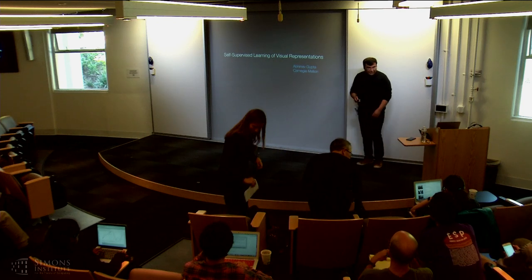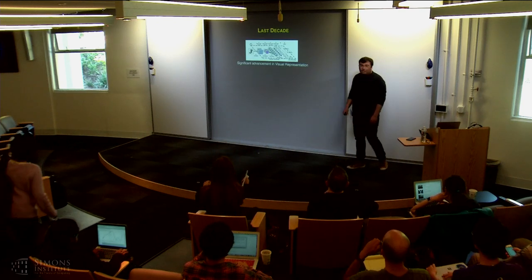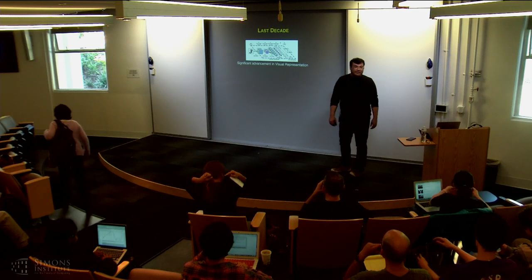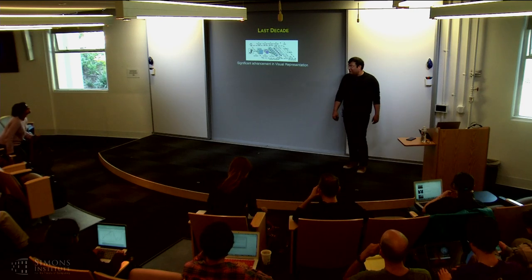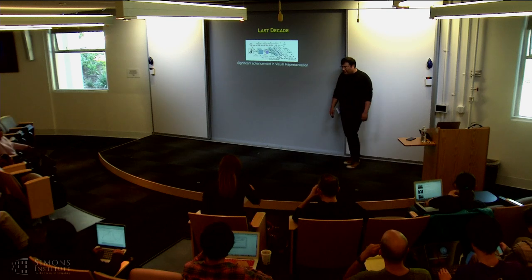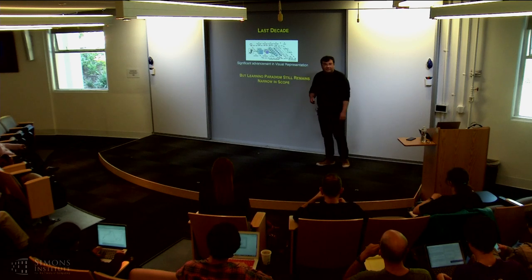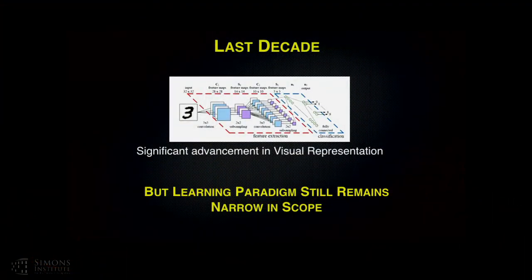Thanks, Kristen. So we all know the story of the last decade — we have made significant advancement in visual representation, thanks to deep networks. However, if you think about the learning of these deep networks, or the learning paradigm that we are using, it still is quite narrow in scope. So how does that learning currently happen, especially in computer vision?